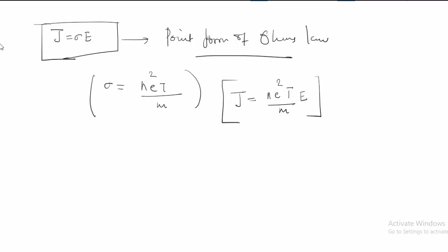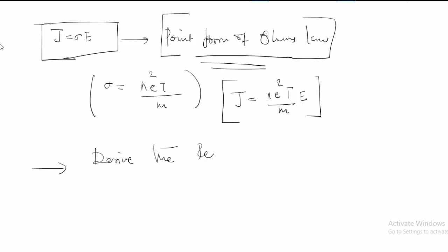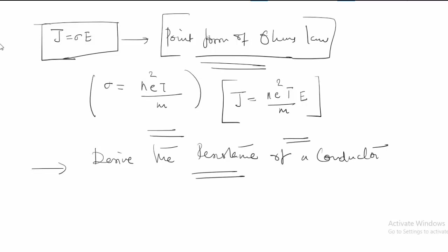This is how we derive the point form of Ohm's law. In the next lecture we will use this same approach to derive the resistance of a conductor, and I will show that the resistance R is equal to rho times L divided by A.